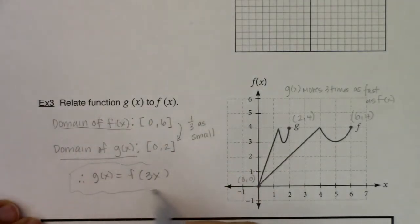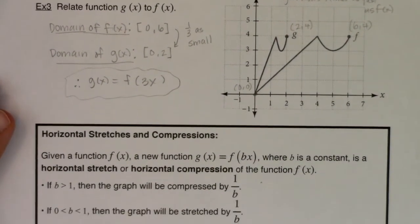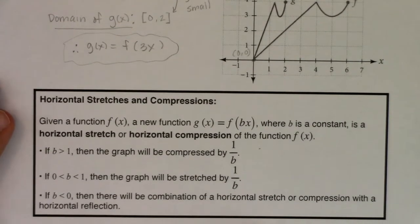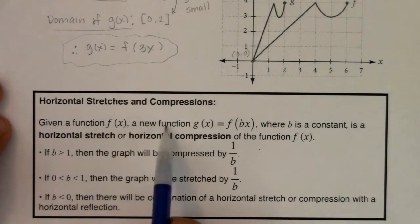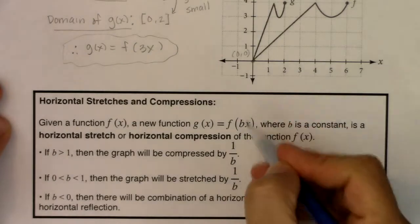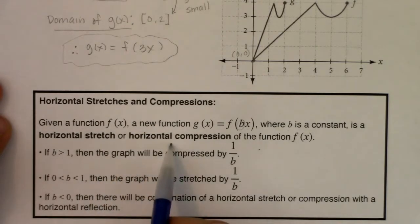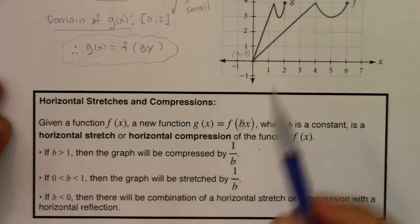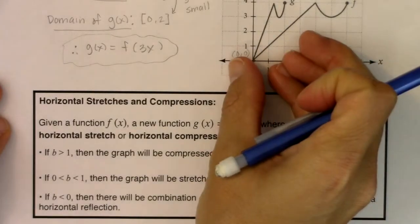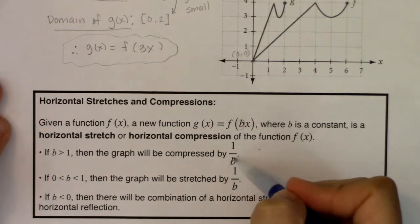Let's summarize that as we start to end this section. Let me scooch this up so we can see the paragraph or the box. Given a function f(x), a new function g which is f(bx), where b is a constant, is a horizontal stretch or horizontal compression of the function f(x). If b is greater than one, then the graph will be compressed by 1/b. We had a compression of about one third. We went from six units to three units, so it was one third as small. So b was three.